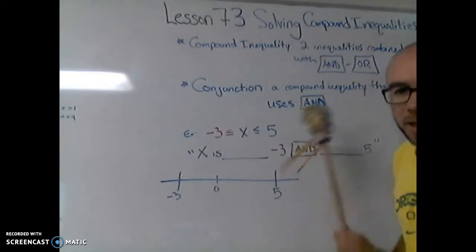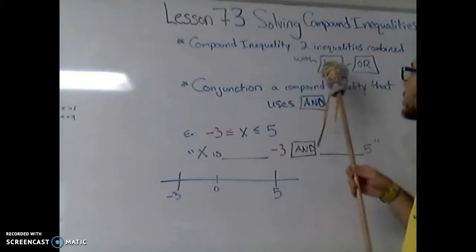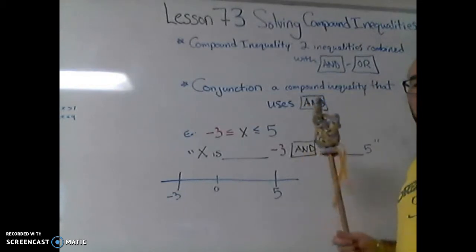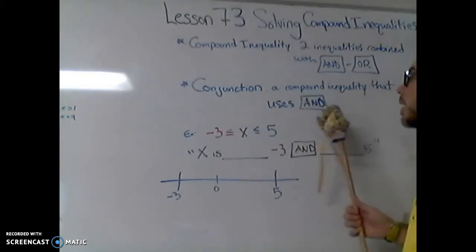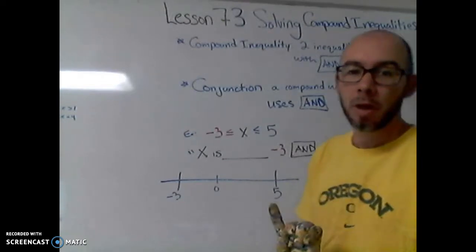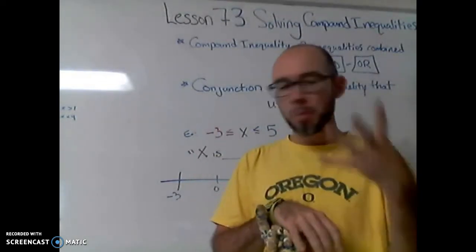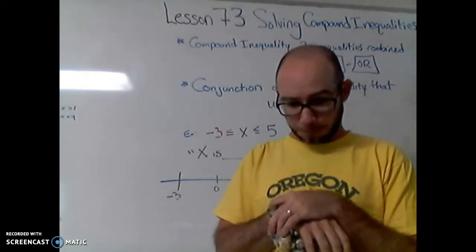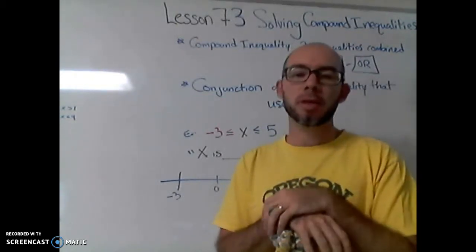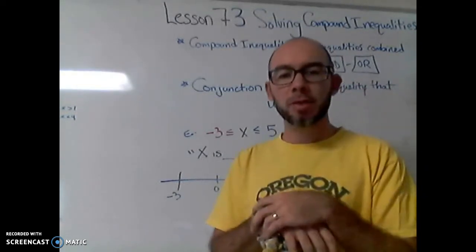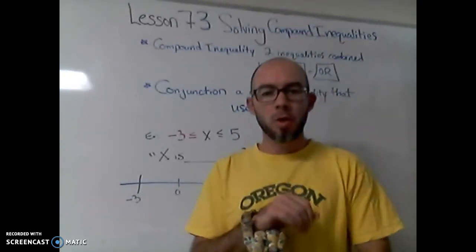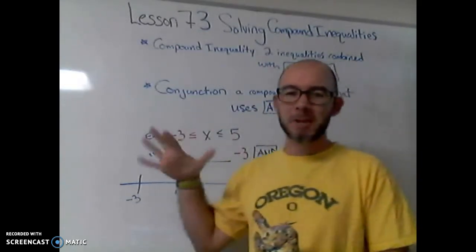If it uses the word 'and,' it's called a conjunction. If it uses the word 'or,' it's called a disjunction. It could be stated as a word problem, as an equation, or even expressed as a picture where you have to write the corresponding statement. You need to be able to interchange all those forms and have all those skills. Let's start with conjunction.